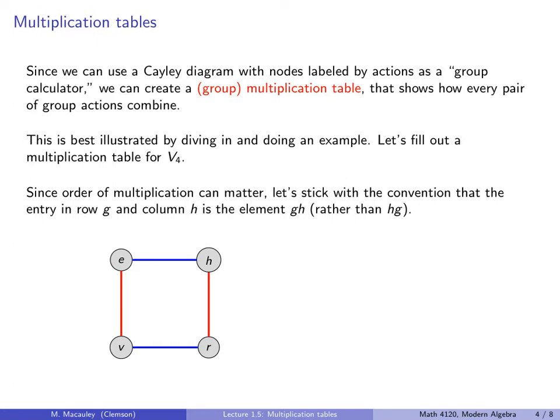Let's fill out a multiplication table for V4. Since the order of multiplication can matter, let's stick with the convention that the entry in row g and column h is the element gh. That means, if you want to multiply g by h, you go down to g and then across. You take g here and h here, and this entry is going to be the element g times h.